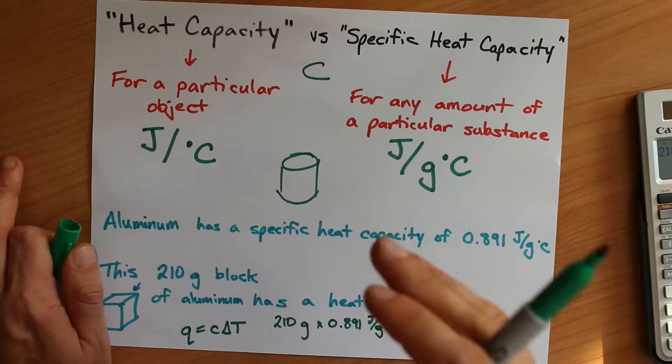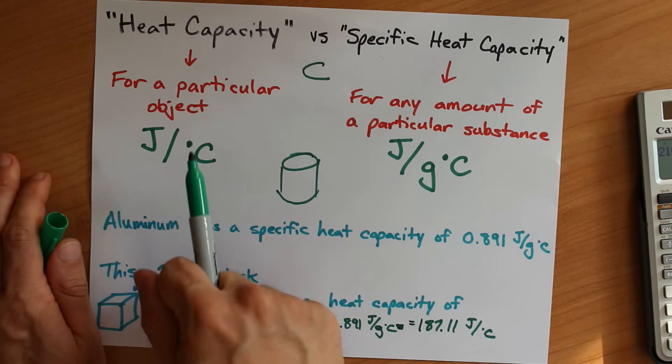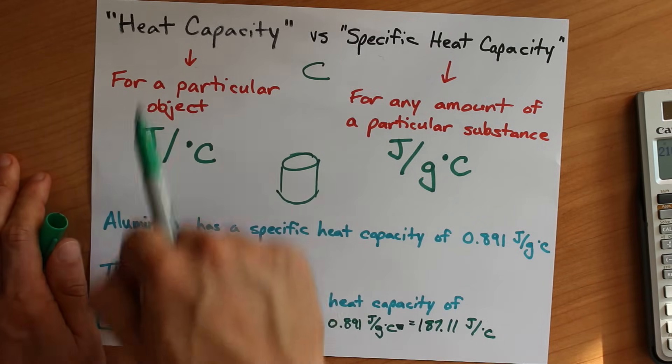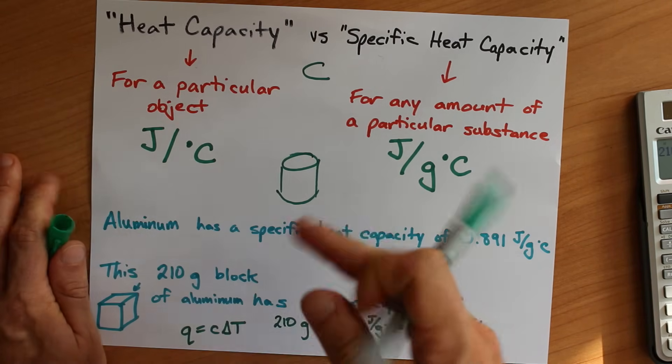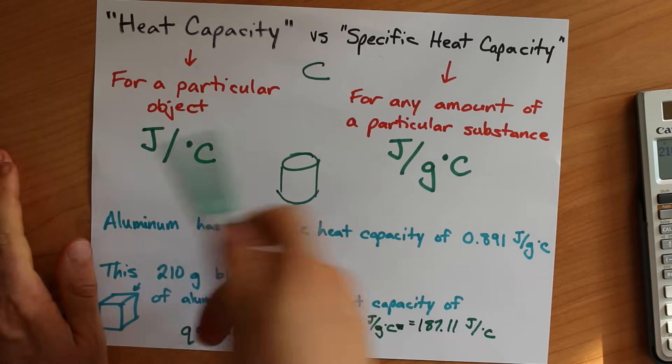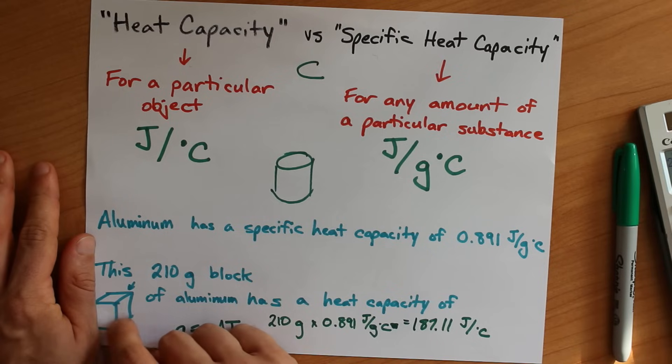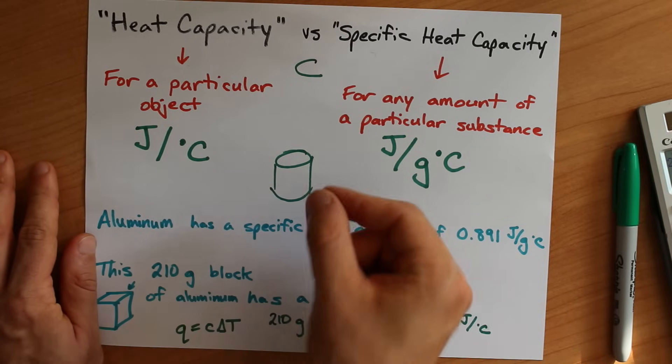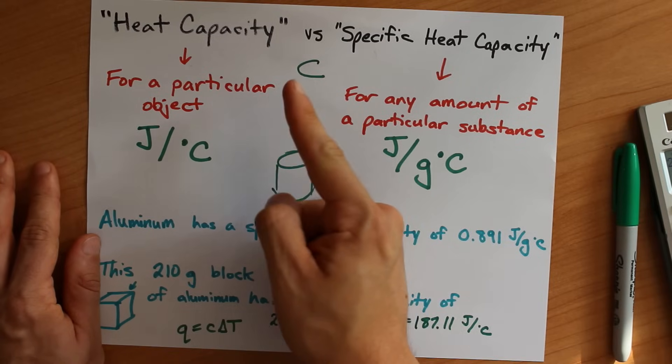Rather than having to use Q equals MC delta T and build in the M every single time, it's easier to just measure the change in temperature, multiply it by the heat capacity, and all of a sudden you have the joules of energy that was released in your reaction. It actually does make it much easier, but you need to know that you're using the same block every single time, because you're building the mass into it. Best of luck.